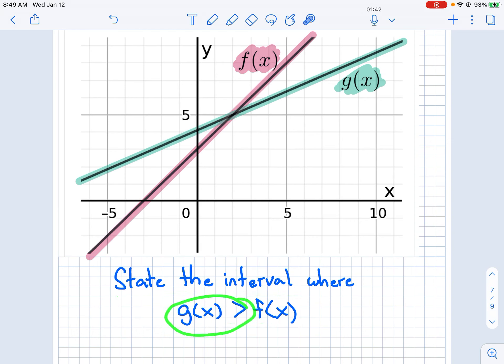So greater than means above the line. So where is the green line? Where is this line?